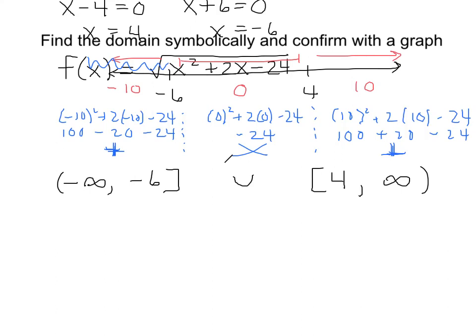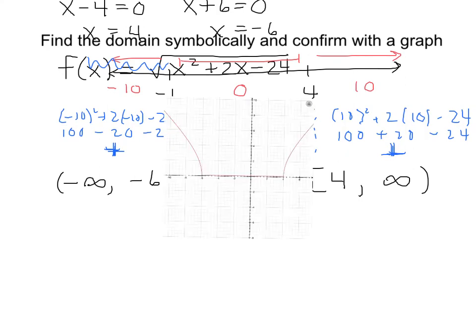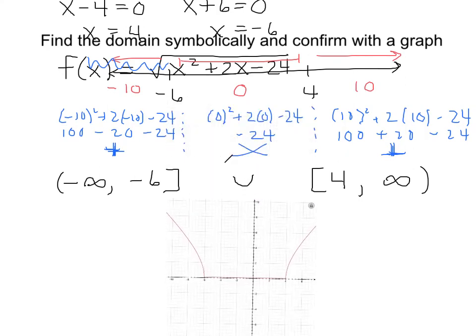So that would be the domain of that radical function that included a quadratic expression underneath the radical. Now let's take a look at what the graph of that looks like. So if we add our graph here, and there it is, we can kind of confirm this. Now first of all, this graph isn't quite right in that it does show some things in the middle here. If we point to these right in here, there's nothing really happening there.